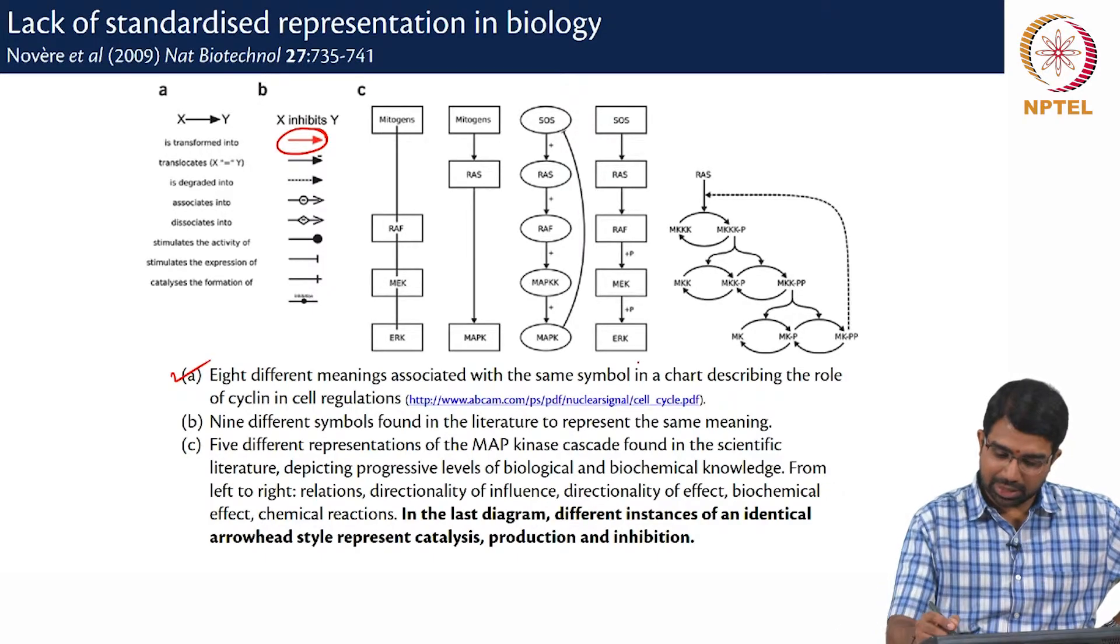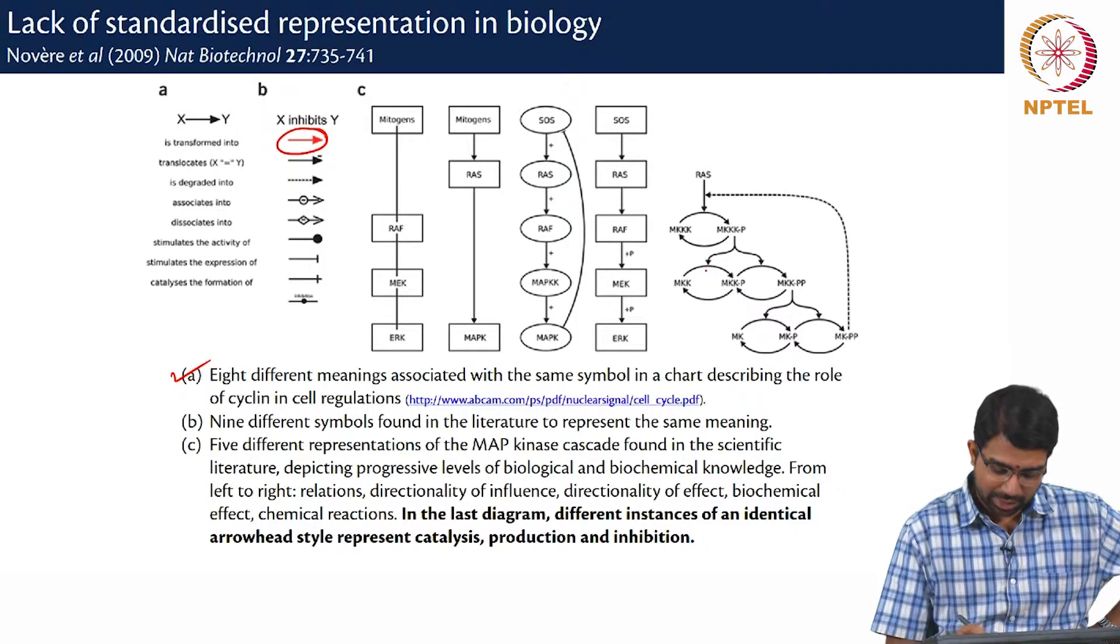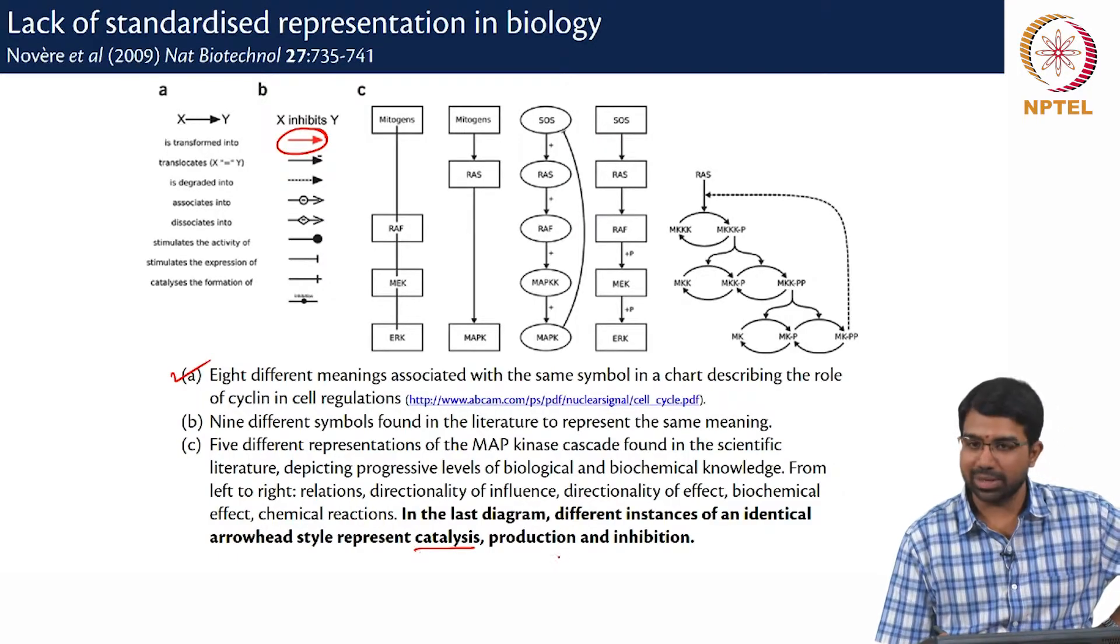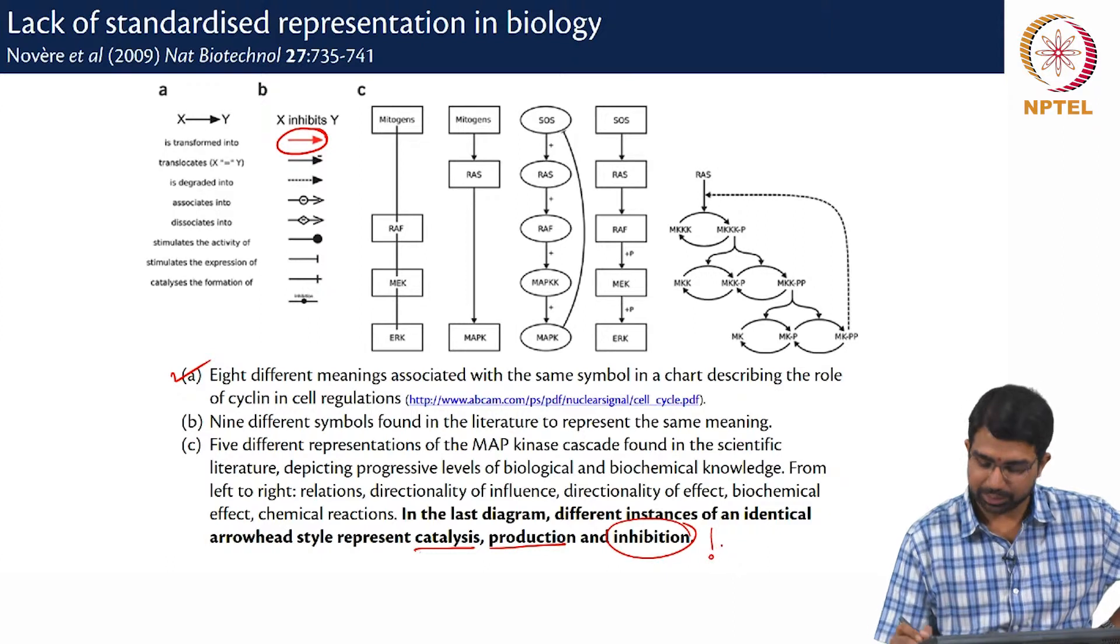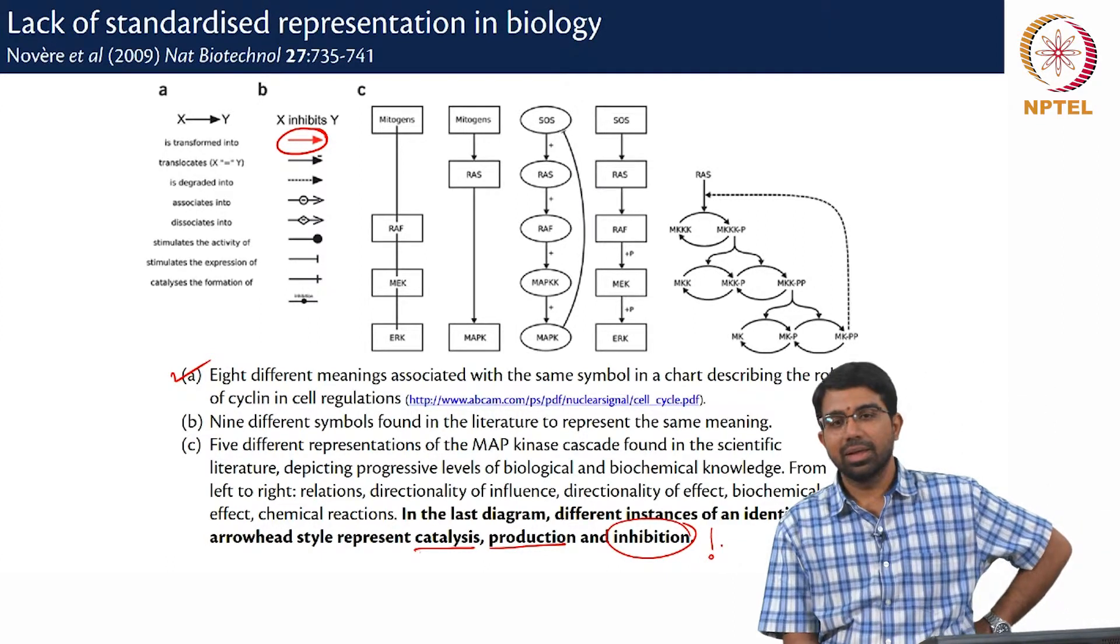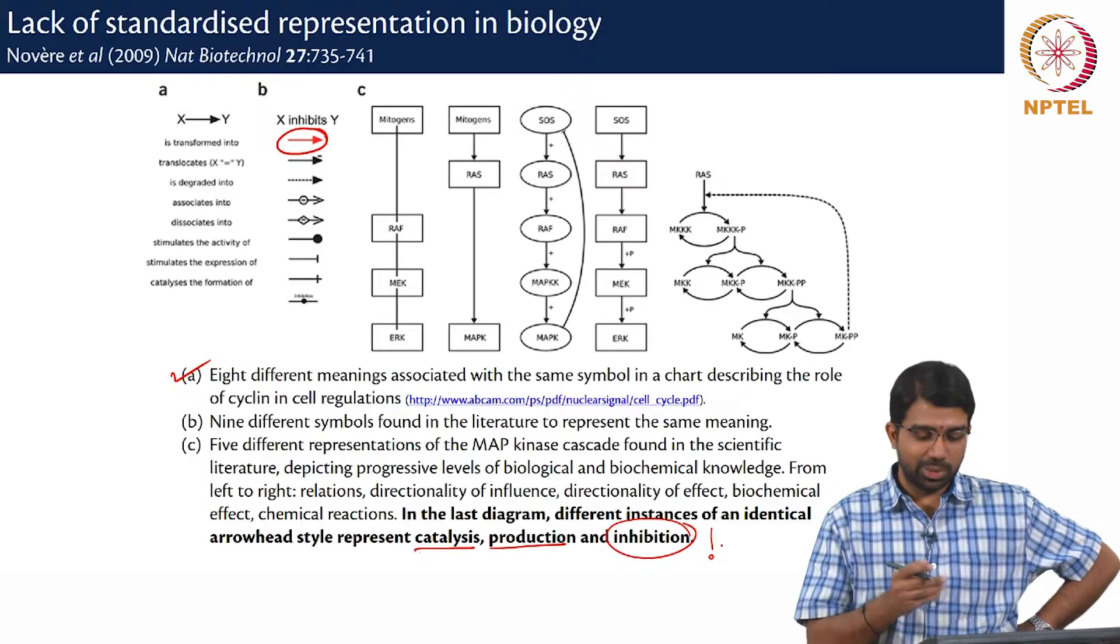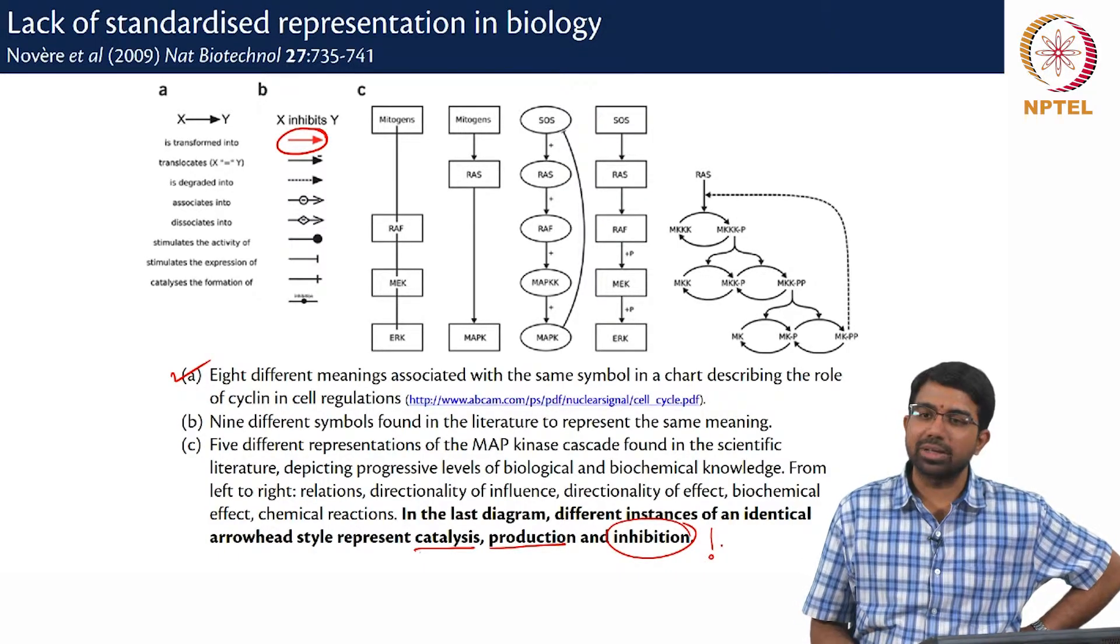And in the last diagram, you see that different instances of an identical arrowhead represent, depending upon the case, catalysis, production or even inhibition. So it gets really challenging to read these figures. How do we make these figures?